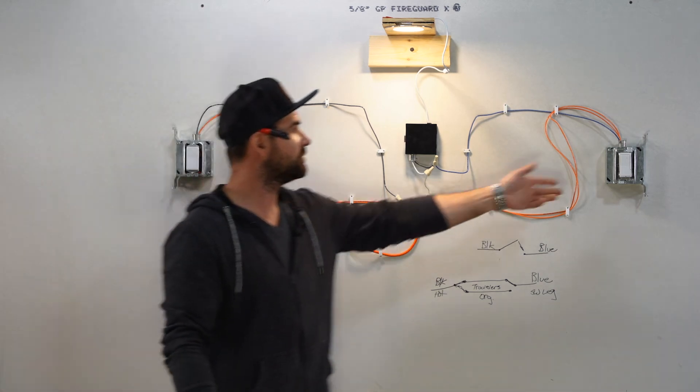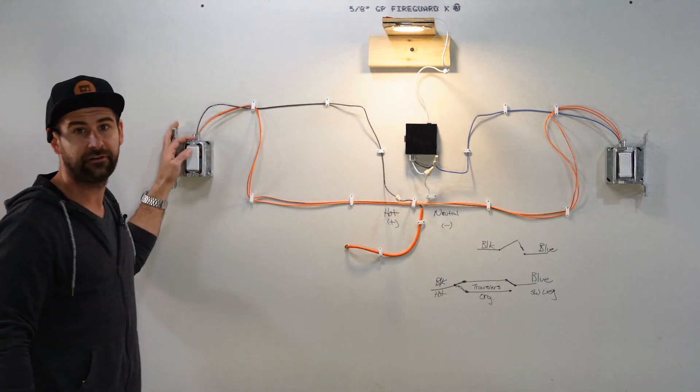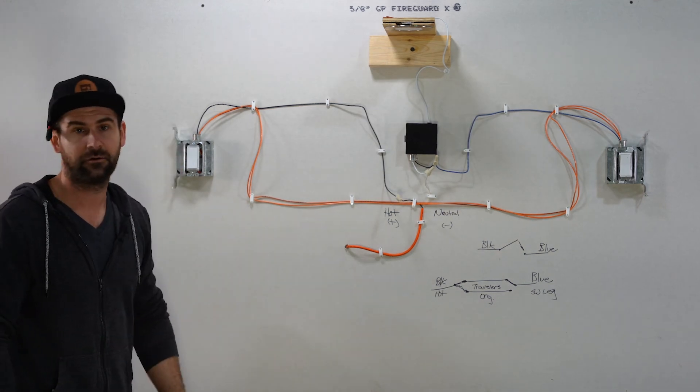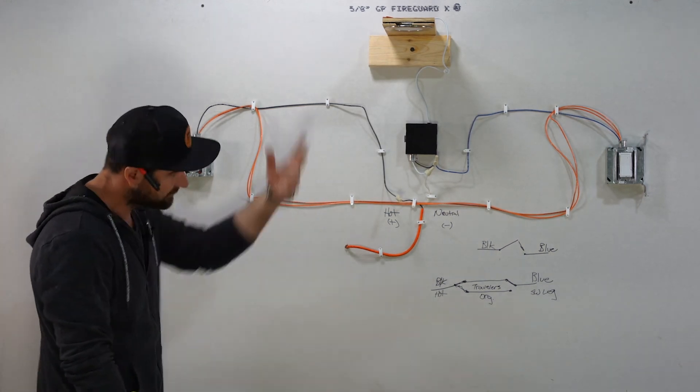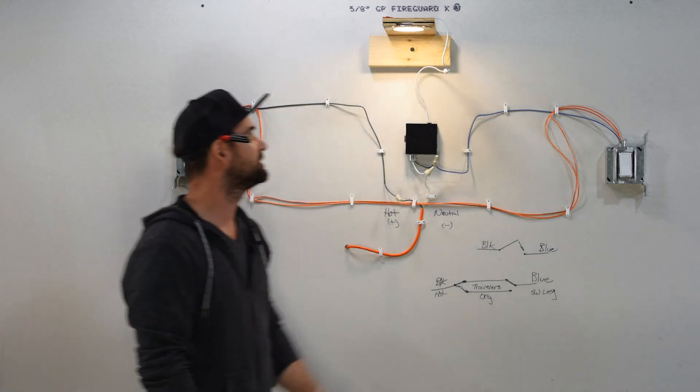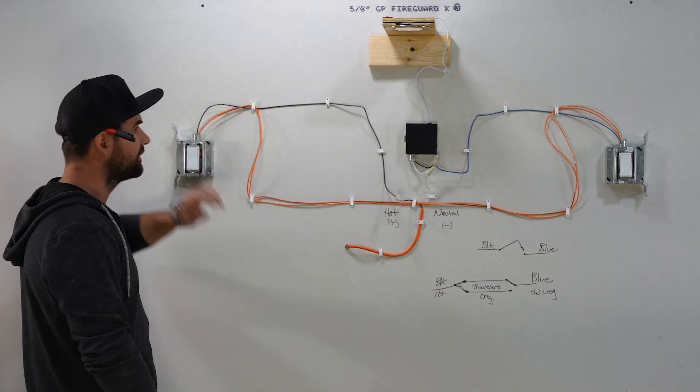So you enter the room in one location and then you leave the room in another and you shut off the light and you go and then maybe you enter back in over here and you hit that switch and you turn it on and then you turn it off again.